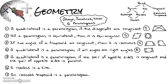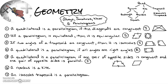Number five: a quadrilateral is a parallelogram if one pair of opposite sides is congruent and one pair of opposite sides is parallel. That would be sometimes true — they're trying to trick you. If one pair is congruent and a different pair is parallel, that could just describe an isosceles trapezoid. It could be a parallelogram, but it's only sometimes true.